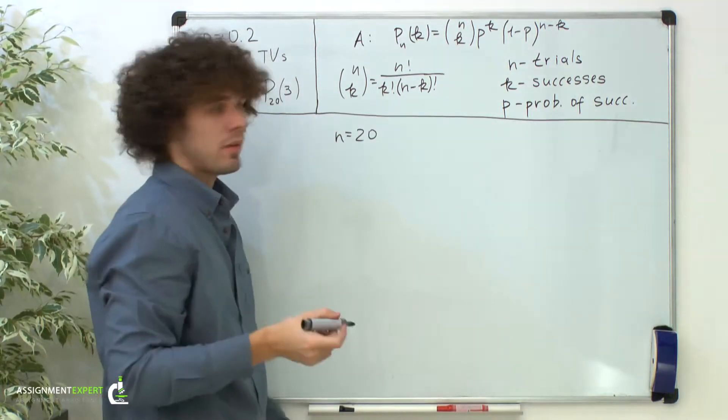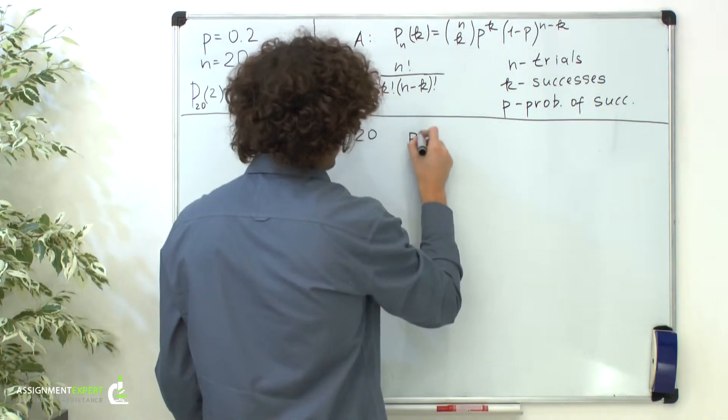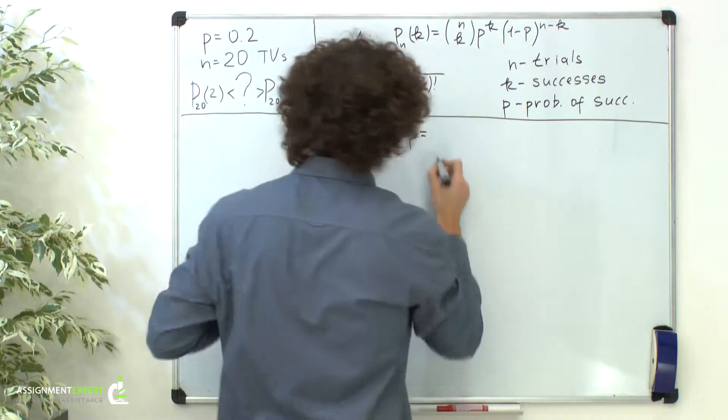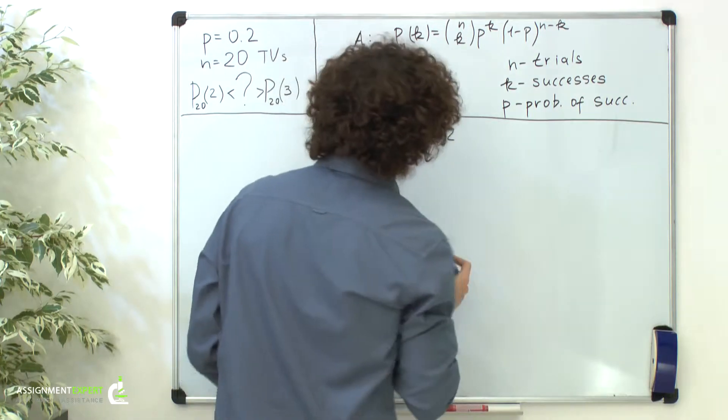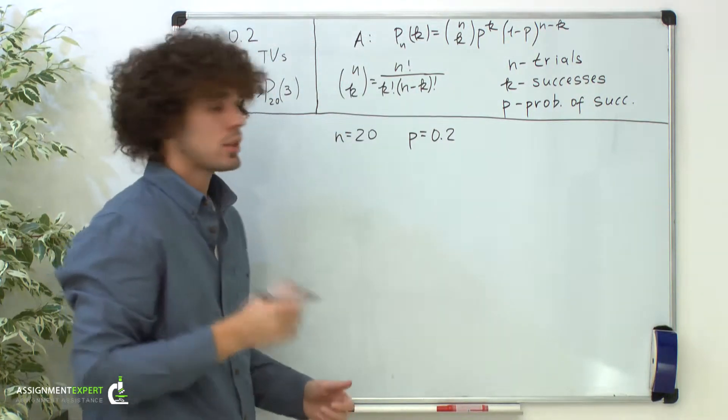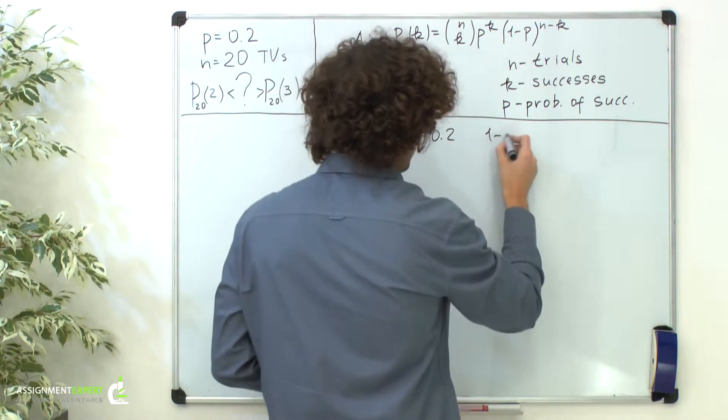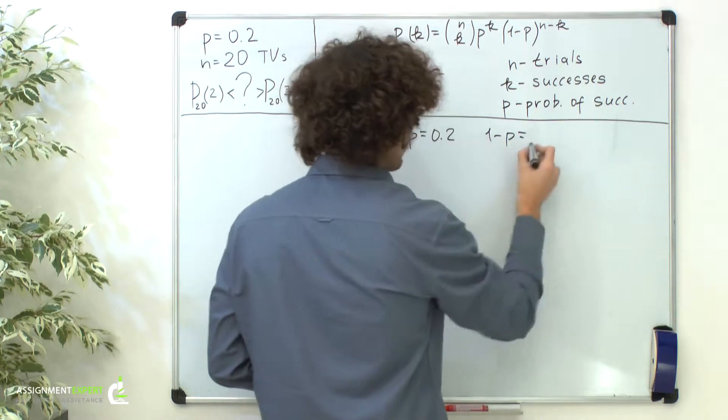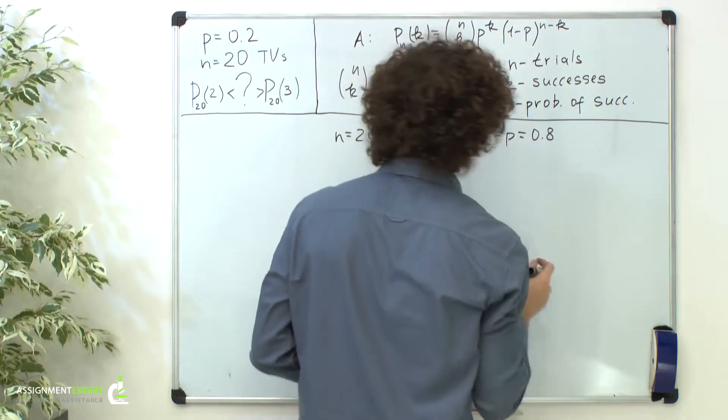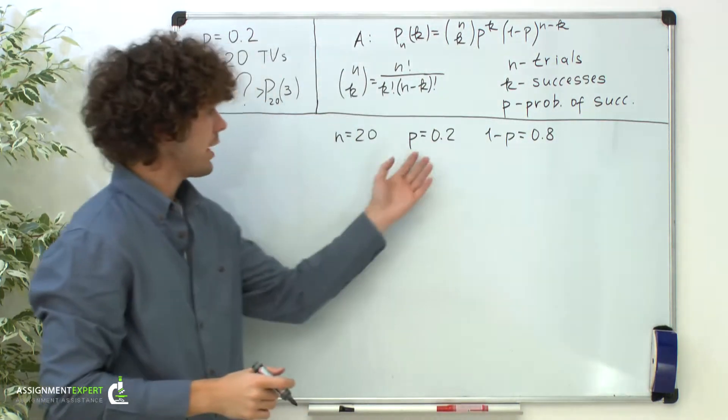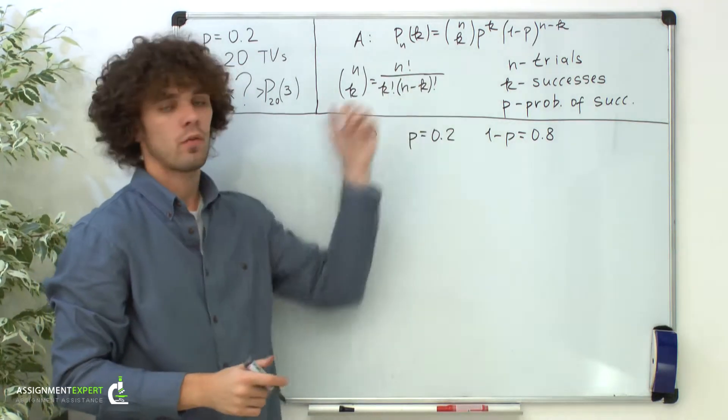The probability that each TV has a hidden defect is 0.2. The probability that the TV has no defect is 1 minus p and equals 0.8. So now we have the starting conditions for the Bernoulli formula.